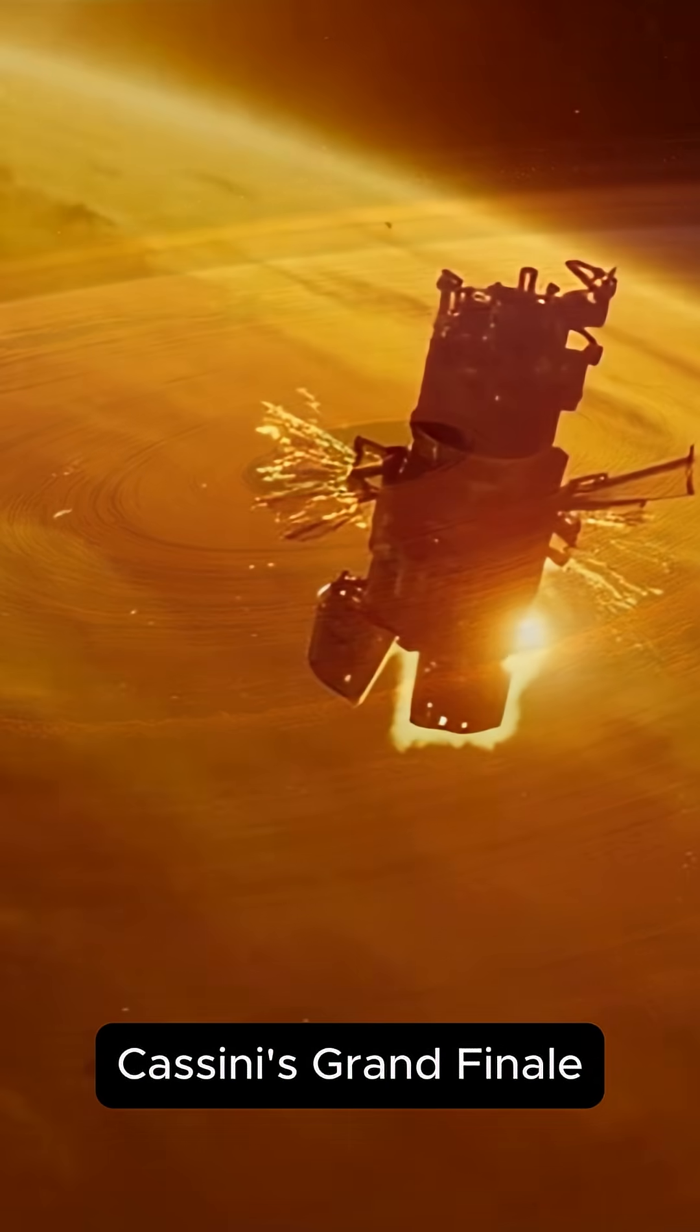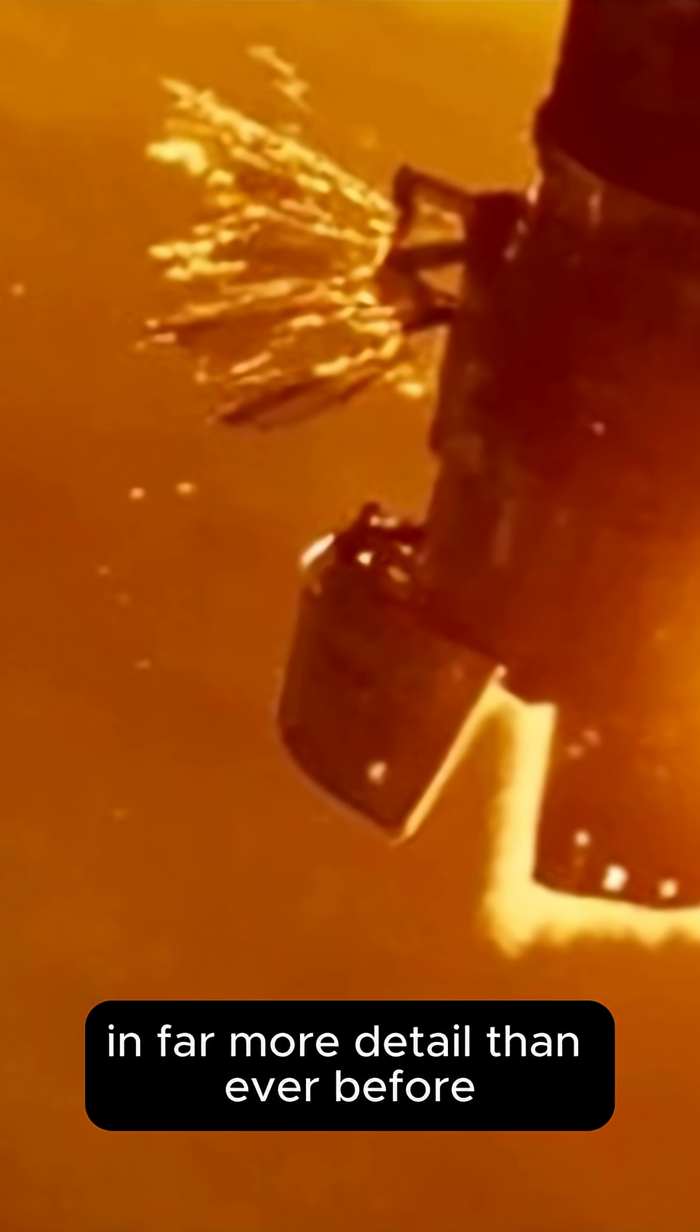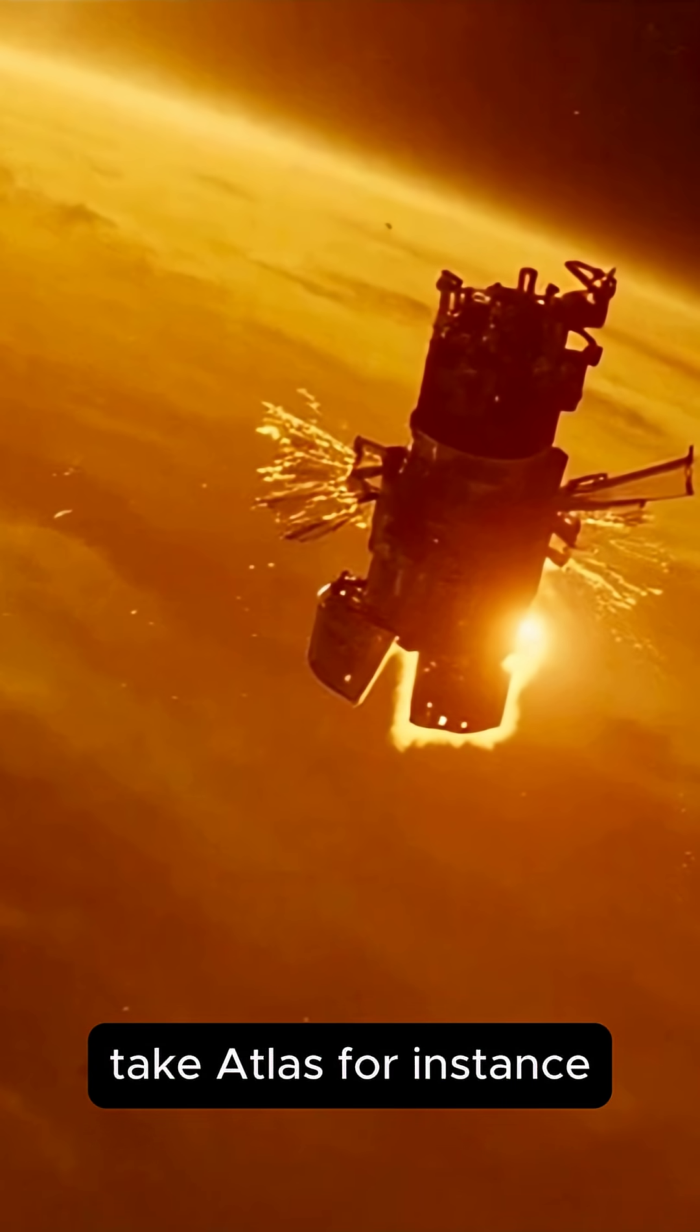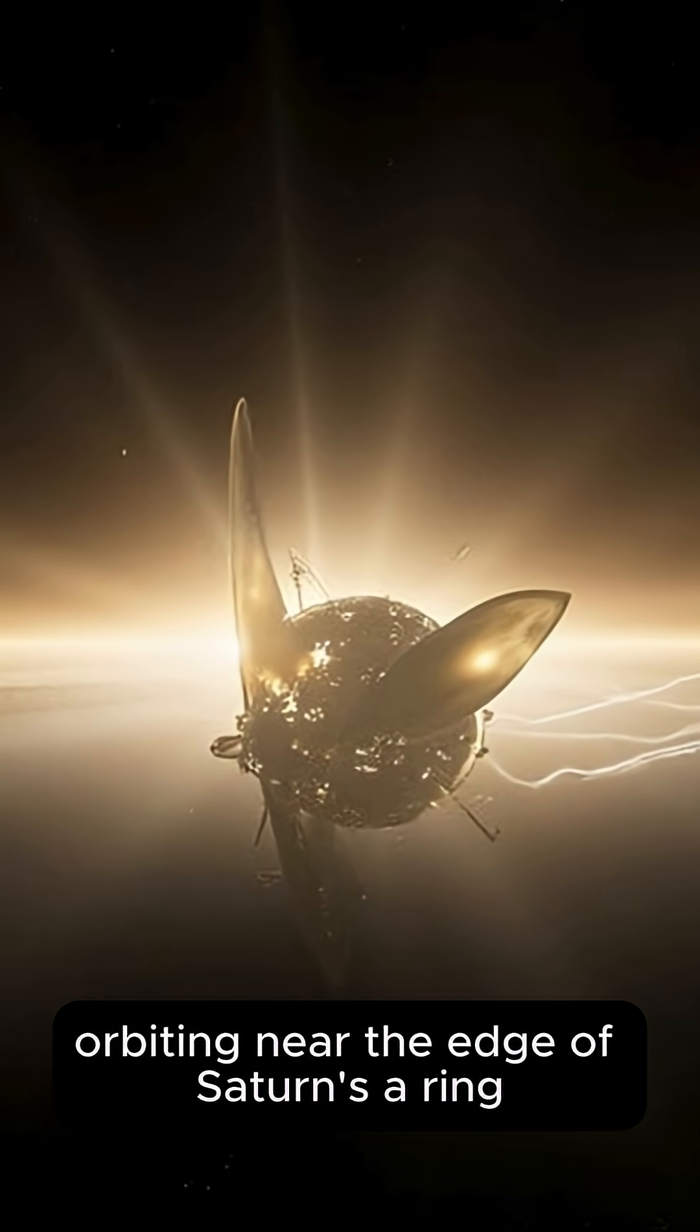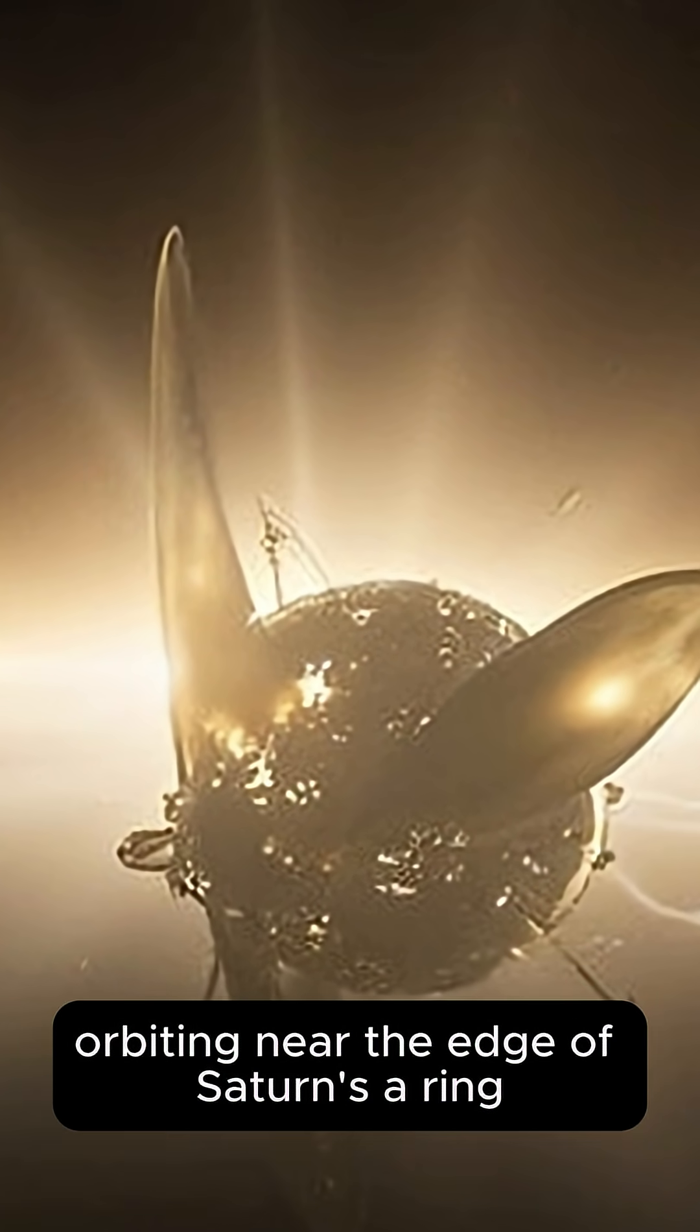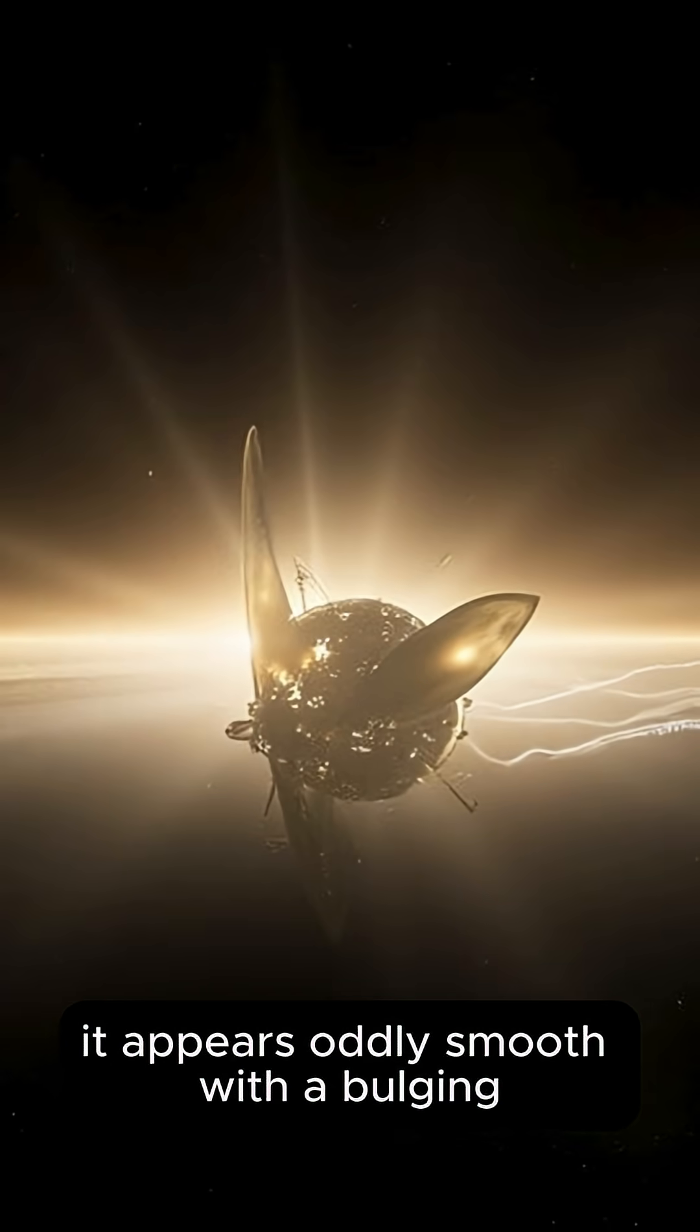Cassini's grand finale allowed it to observe these moons in far more detail than ever before. Take Atlas, for instance, a small 40-kilometer-wide moon orbiting near the edge of Saturn's A-ring. From Cassini's images, it appears oddly smooth with a bulging equator.